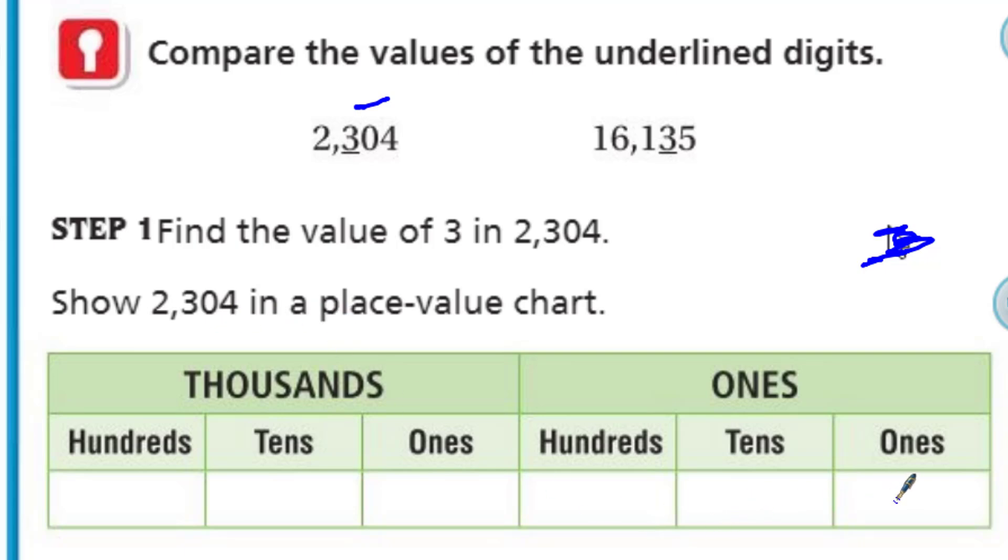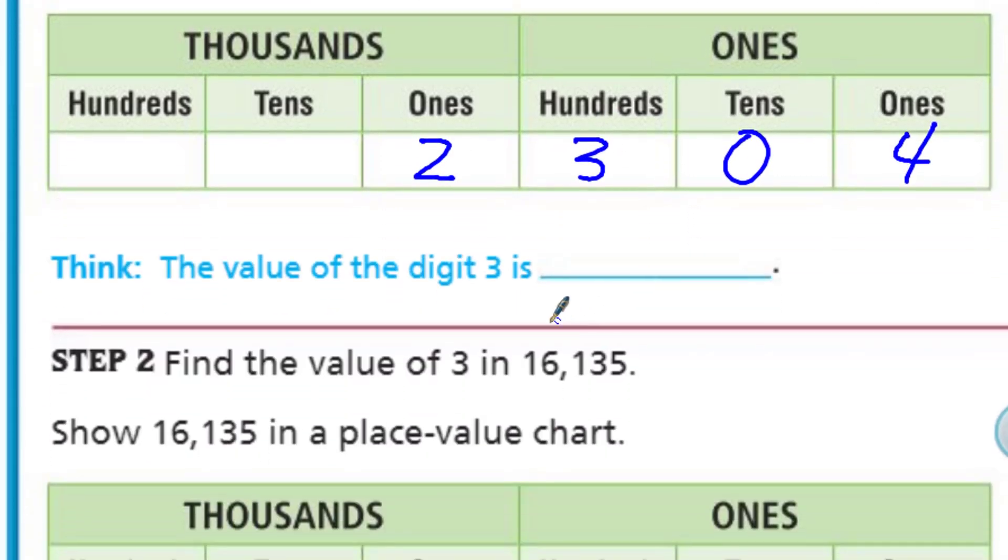I'm going to put my four here, zero, three, two. Now it says think the value of the digit three is, well, it's 300 because it's right there. Remember, this is that very first period. That's the second period, thousands.